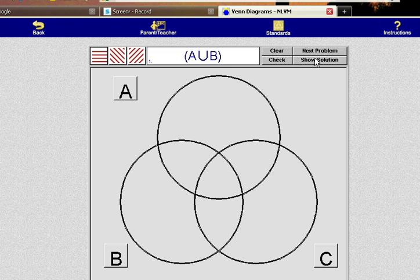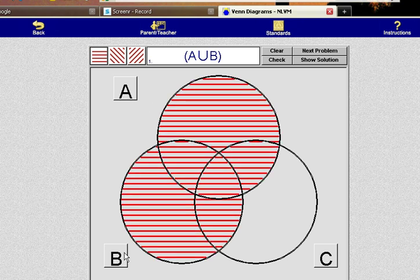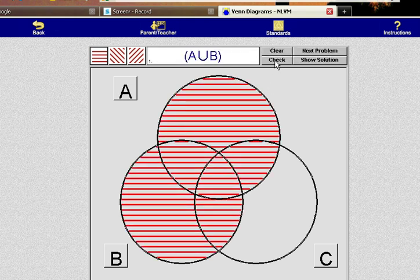Well let's go ahead and do number one which is A union B. Well A union B, I'm going to need everything in A. I'm going to need everything in B. All these points are either in A or in B or both. And then I hit check. Oops. Let's try that again. Let's hit check. And it says very good.